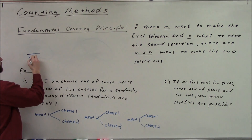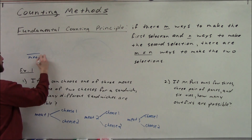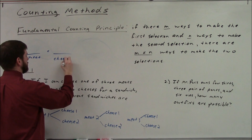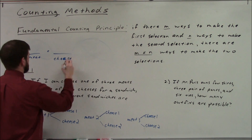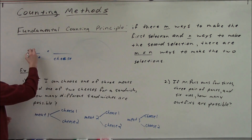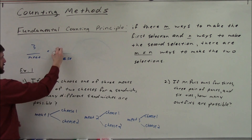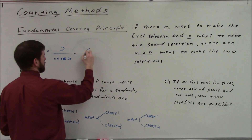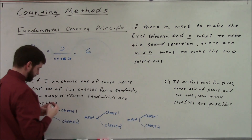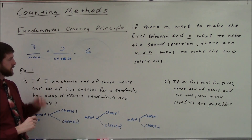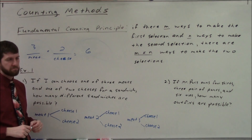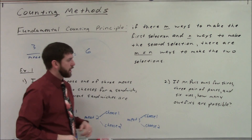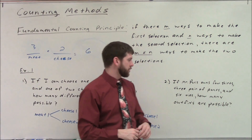Or we could just say: how many meats times how many cheeses? There are three meats and two cheeses, so we get a total of six combinations of one meat and one cheese. Pretty straightforward.